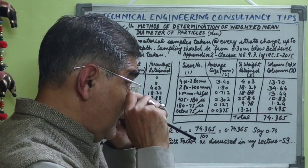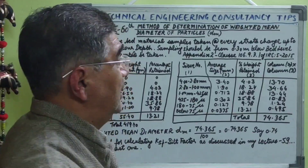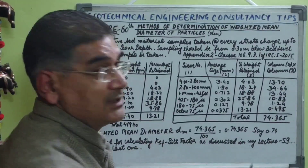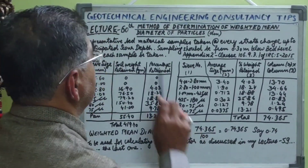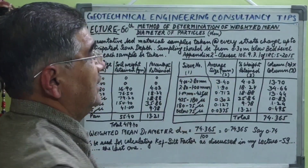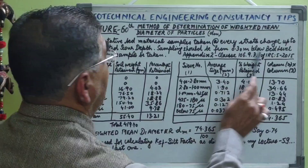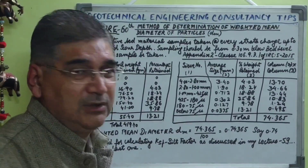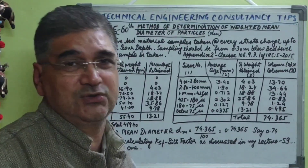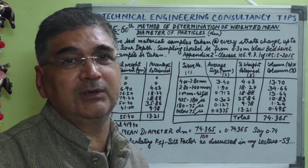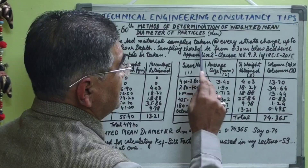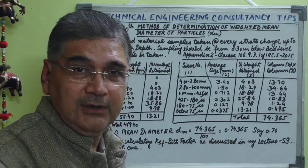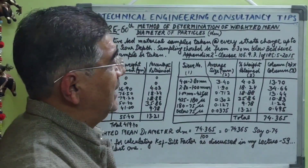This is to help all geotechnical engineers and civil engineers, as well as bridge engineers, understand how this weighted mean diameter is calculated. The code suggests that representative bed material samples should be taken at every change of strata, up to the maximum anticipated scour depth.